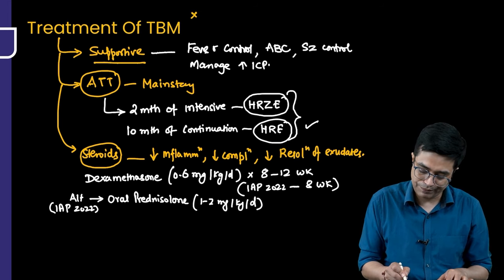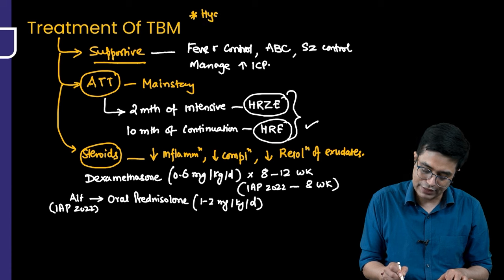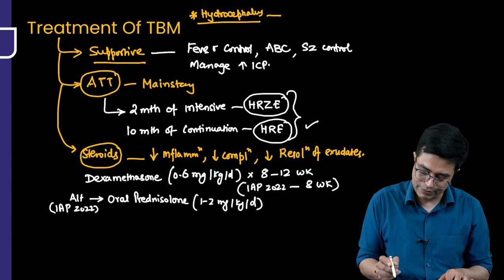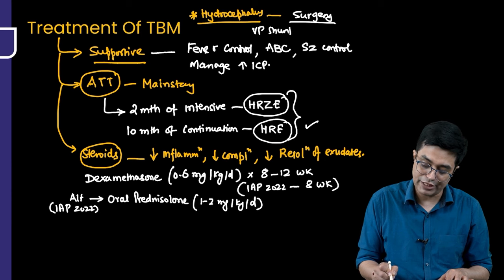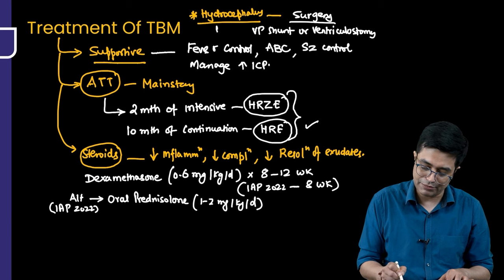You can perform either a VP shunt (ventriculoperitoneal shunt) or ventriculostomy. These may sometimes be needed for hydrocephalus.